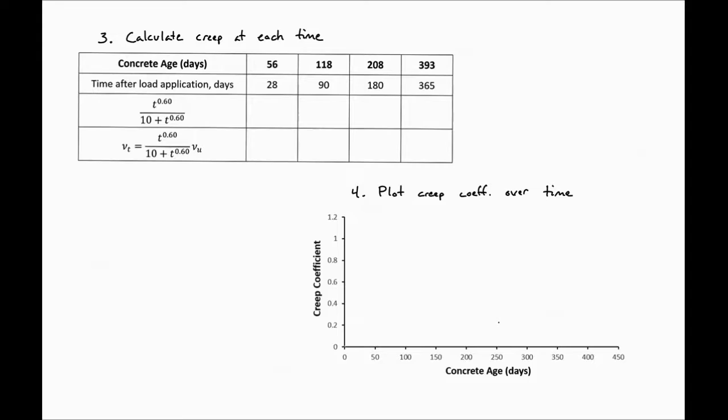The first thing we did was, from the concrete age and the time of loading, we found the time after load application. This time after load application is T, and this is what we use in our T here. If we put these values in, we can find the first component of our time dependency.